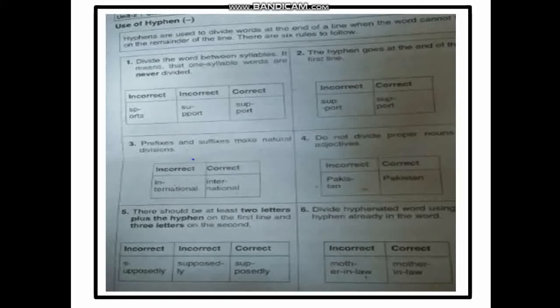For example, 'Pakistan' is a two-syllable word but you should not put a hyphen in it — that would not be acceptable to a checker. Rule five: there should be at least two letters plus the hyphen on the first line and three letters on the second line. For example, 'supposedly' can be split as 'sup-' on the first line and 'posedly' on the second.